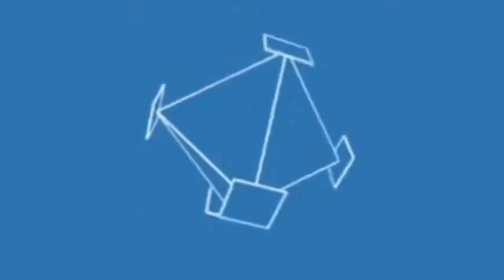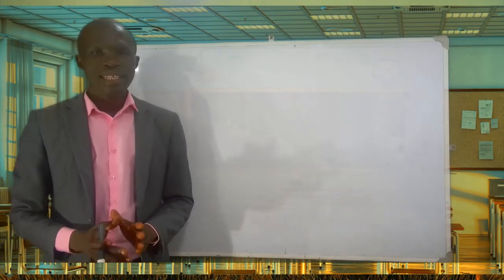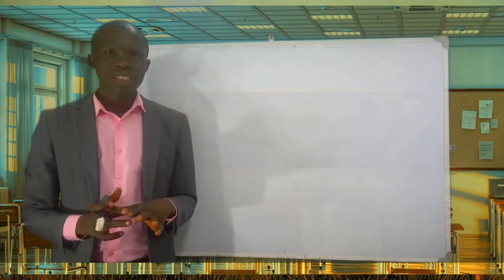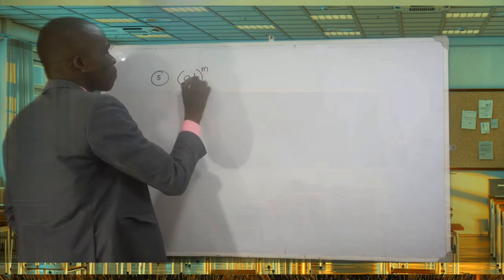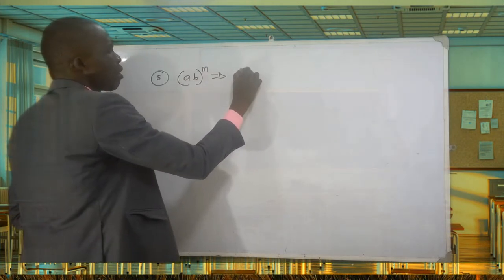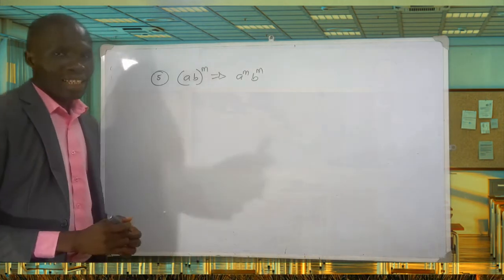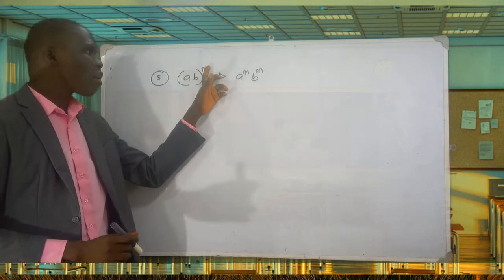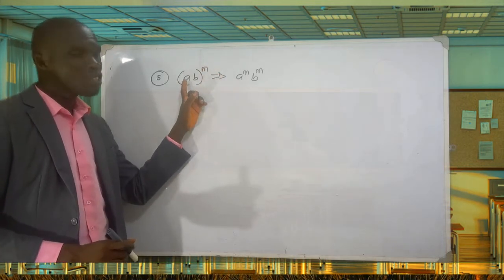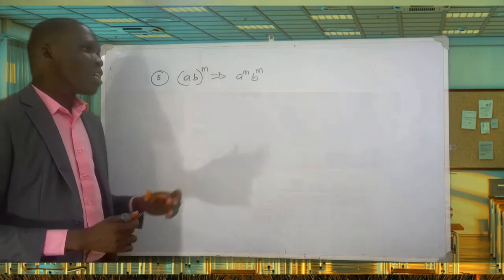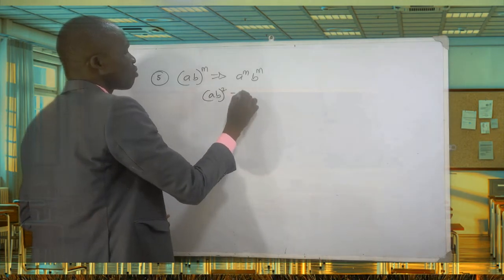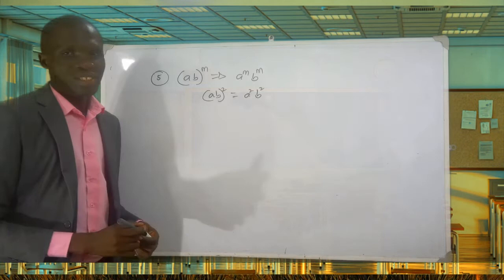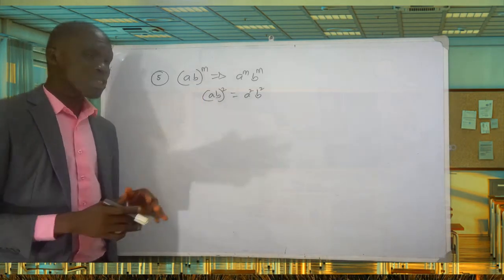The fifth law: if you have (ab) raised to power m, this gives you a raised to power m multiplied by b raised to power m. The power affects each individual factor. For example, (ab) squared gives you a squared times b squared. That is the interpretation of the fifth law.